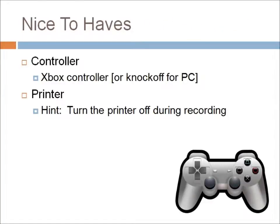Things that are nice to have — that you don't really need but will eventually step up to — include a controller. For PC, I almost always recommend buying an Xbox or knockoff controller. I've been using an Xbox 360 controller for a long time and find it quite comfortable. The reason I have the controller is for games like Shovel Knight — you could probably play it with a keyboard, but it would be torturous. So for those kinds of games, you probably want a controller.